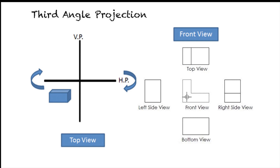To draw right and left views, the rule of projection is followed. Right and left side views are projected on vertical right and vertical left planes respectively. To draw the right side view on the 2D plane, the right plane is unfolded towards the right side. As a result, the right side view is projected on the right side of the front view. Similarly, the left side view is projected on the left side of the front view. The bottom view is projected on the bottom plane and the view is placed on the bottom of the front view.